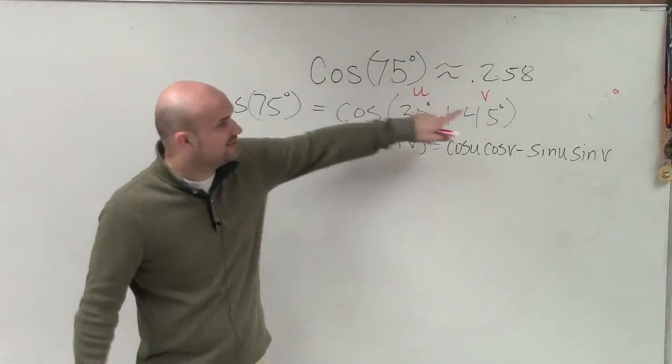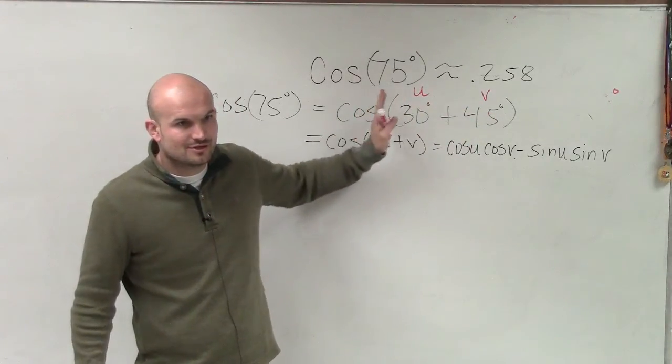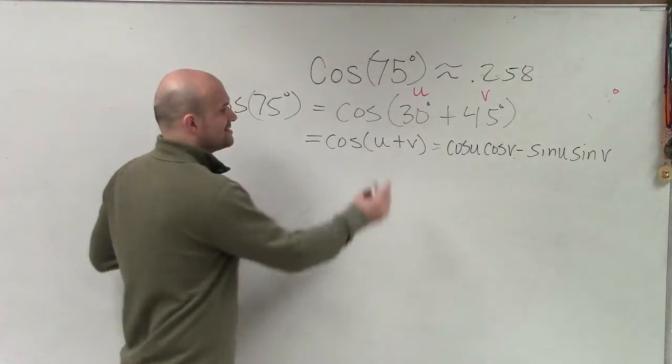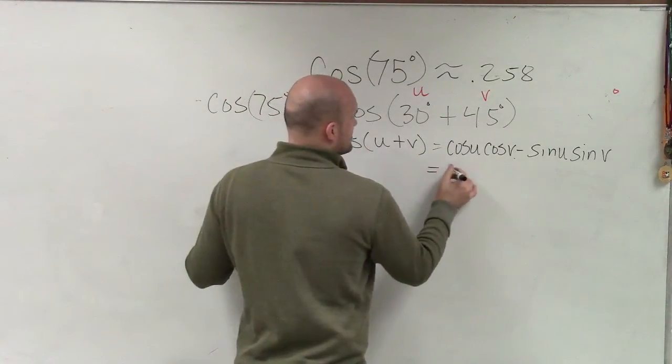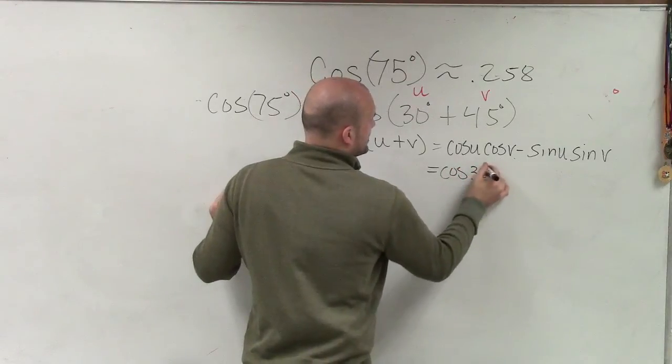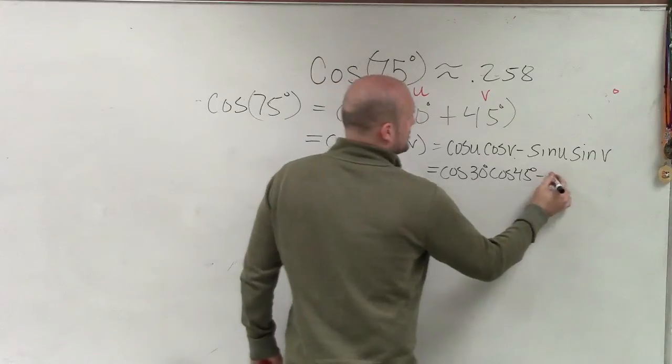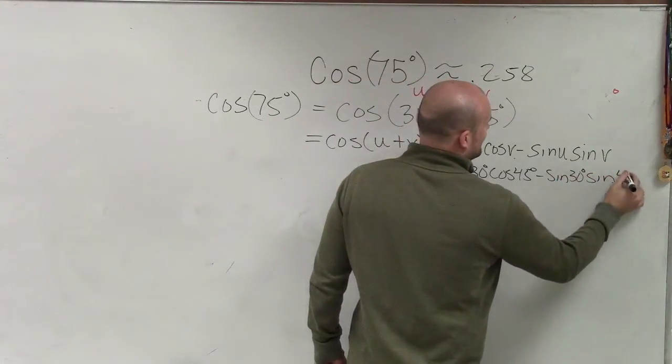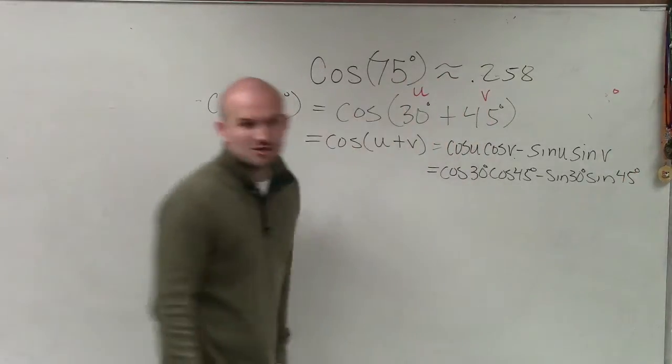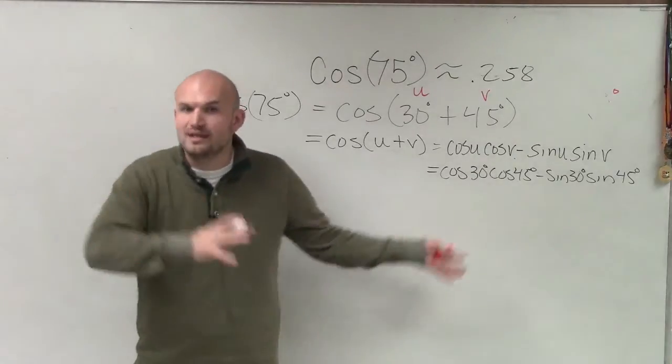If we say that this is u and this is v, then I could say, well, if I'm doing cosine of u plus v, that means this is the cosine of 30 degrees times the cosine of 45 degrees minus the sine of 30 degrees times the sine of 45 degrees. Remember like algebra one, you just plug in. u is 30 degrees, v is 45 degrees, so you just plug it in.